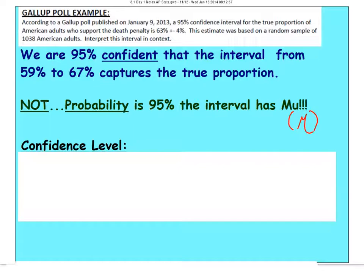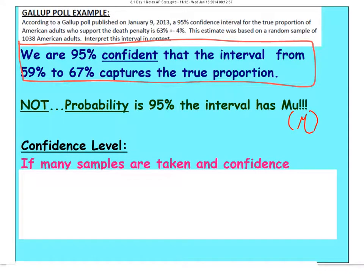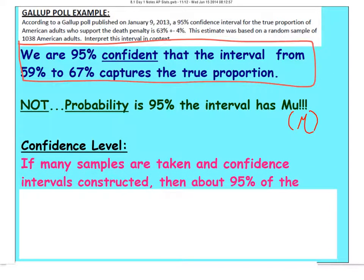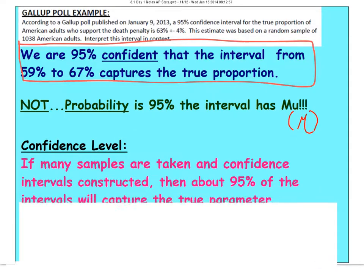Now, let's talk about confidence level. How do you interpret the confidence level on this? Again, this is one that is just worth memorizing. This here is confidence interval, and it's a good way to default and always say it. Confidence level, on the other hand, is this: If many samples are taken and confidence intervals are constructed, about 95% of the confidence intervals will capture the true parameter.